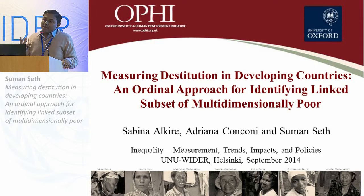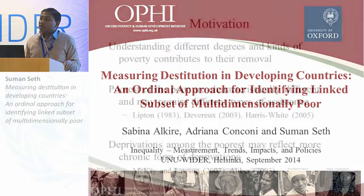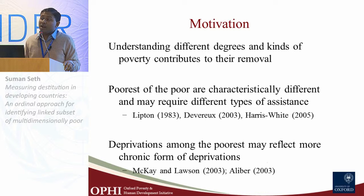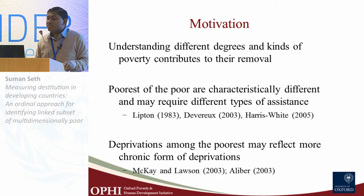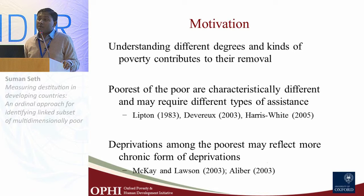Understanding different degrees and kinds of poverty helps in their removal. It is quite well known that if we just use headcount ratios, we can give a deliberate incentive for policymakers to ignore the situation of those who are poorest, because you get maximum gain just by reducing the number of poor. That can happen simply by reducing the marginally poor, even while ignoring the poorest of the poor. It has also been argued in the literature that the poorest of the poor may be characteristically quite different and may require different kinds of policies and assistance.